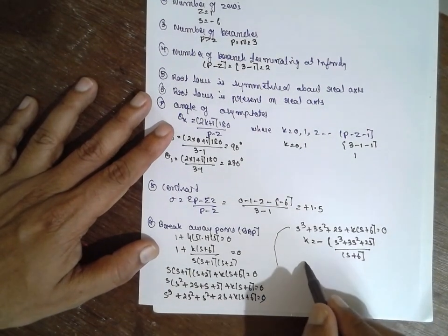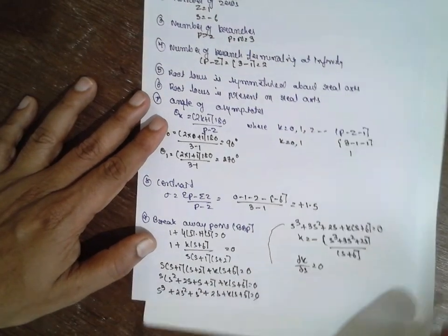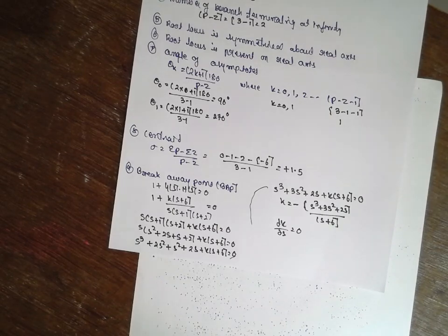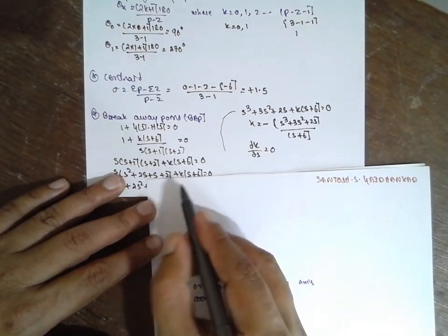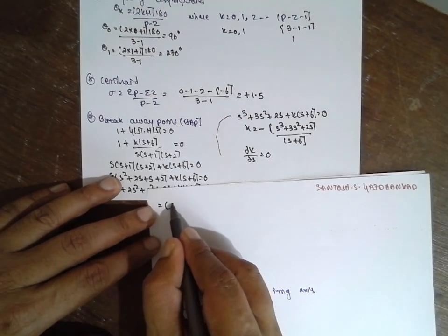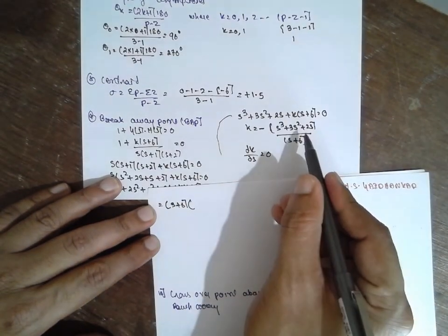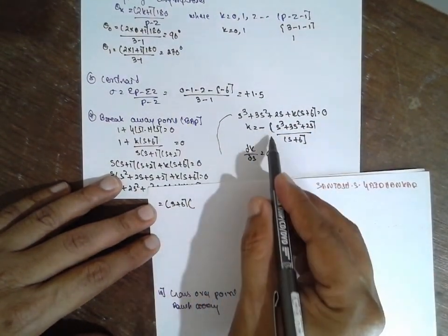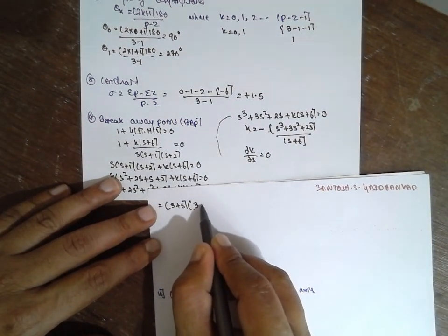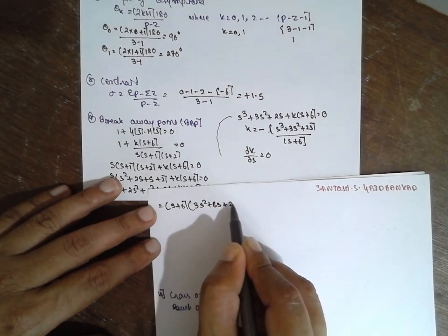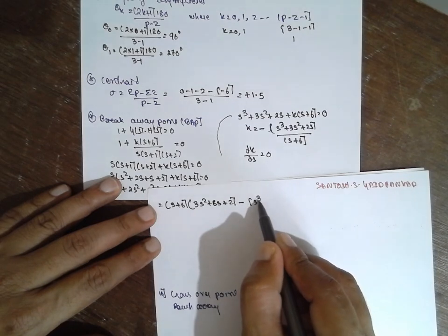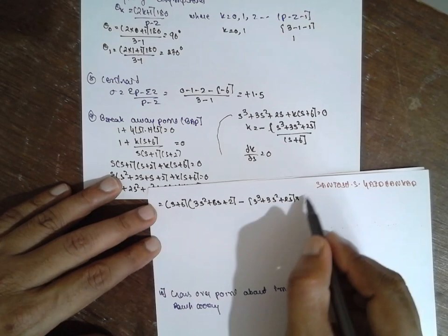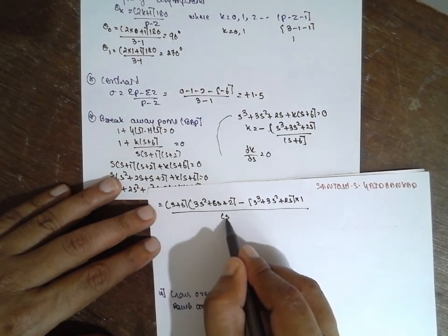Next, dk/ds — you have to differentiate this. Using the quotient rule: keep s plus 6 as it is and differentiate the numerator, giving 3s squared plus 6s plus 2, minus (s cubed plus 3s squared plus 2s) into 1, all divided by (s plus 6) squared, is equal to 0.